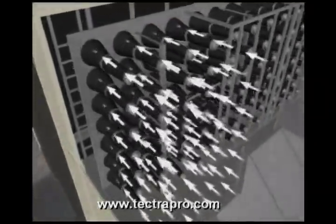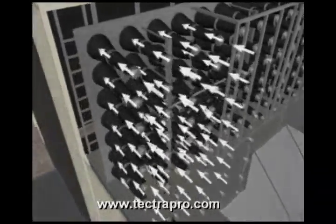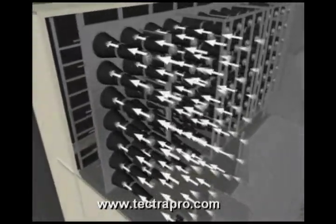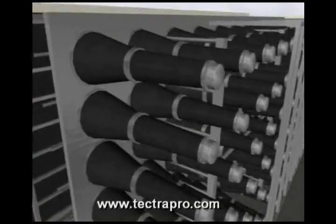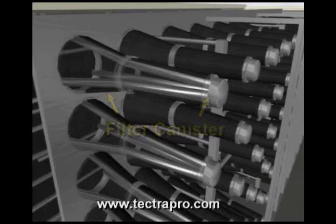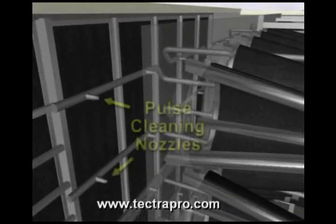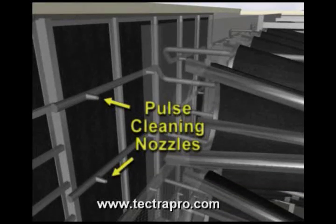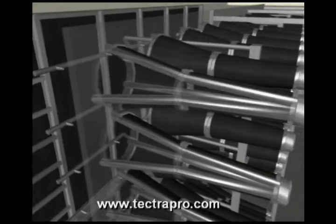The filter banks are constructed with self-cleaning filter assemblies. The pulse filter cleaning system uses a reverse airflow technique to clean debris from in-service filters. A differential pressure sample compares the pressure between the filter banks upstream and downstream and indicates when the filters are in need of cleaning.